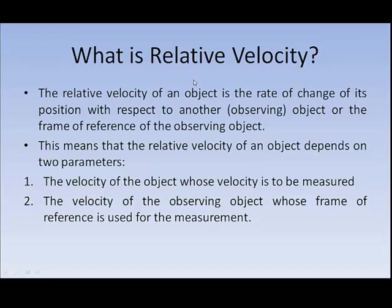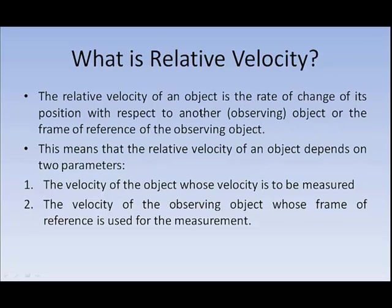Now we are looking at what relative velocity is. In the case of regular velocity, we were measuring velocity with a fixed frame of reference. When we talk about relative velocity, the relative velocity of an object is the rate of change of position with respect to the frame of reference of a different object. We are not measuring its velocity with respect to the ground; we are measuring its velocity with respect to another object.